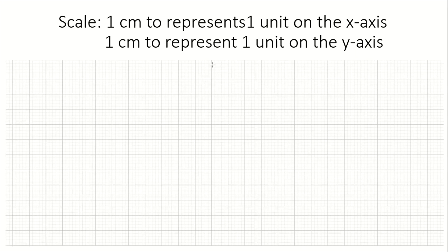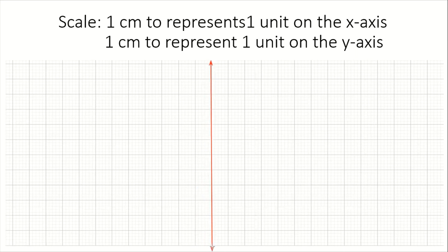The first thing I'm going to do is draw a vertical line that represents my y-axis. Then I need a horizontal line that intersects this vertical line at a right angle to form my x-axis. I'm going to use a different color for the x-axis.